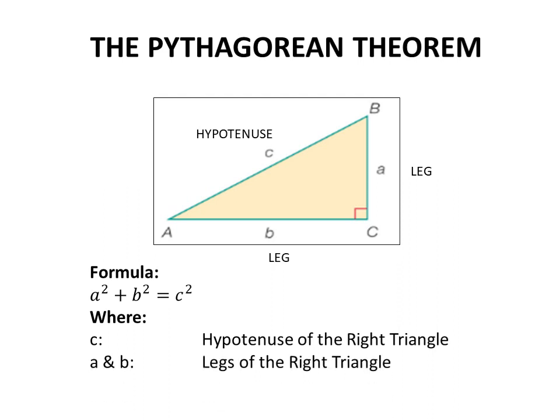Side A and B are the legs of the right triangle. If we square both legs of the right triangle and add them together, we will have A² + B². A² + B² is always equal to the square of the hypotenuse of the right triangle, which is C².